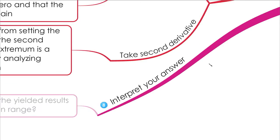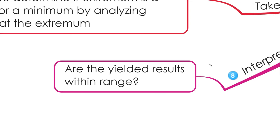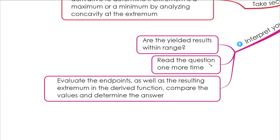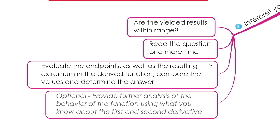Then interpret your answer — check whether the results you got are within range. Did you get a maximum area? A minimum distance? Read the question one more time if you're not sure what you're answering. Evaluate the endpoints as well as the resulting extremum in the derived function, compare the values, and determine your answer. Optionally, you can provide further analysis of the function's behavior using the first and second derivative — function to first, function to second, second to first, first to second; they're all connected.